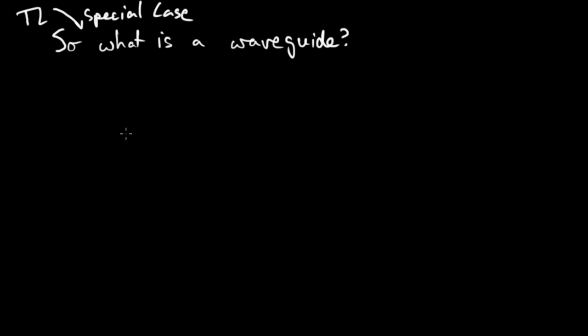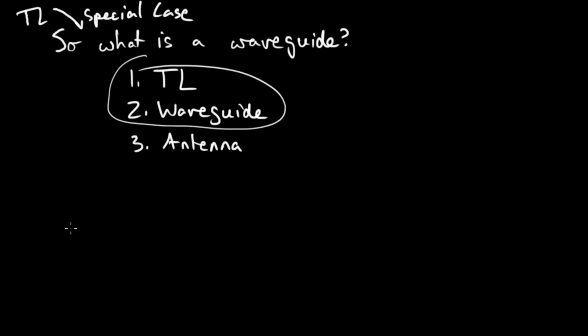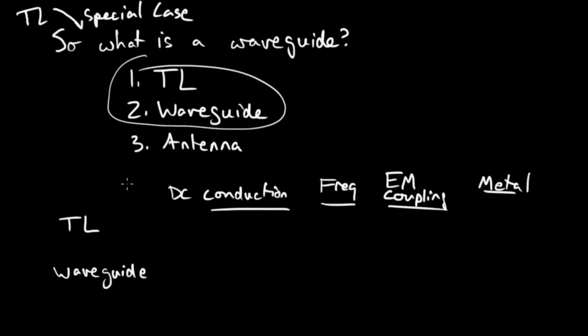Broadly there are only three ways to transmit electromagnetic signals from source to load. You can either use a transmission line, you can use a waveguide, which as I mentioned is a special case of transmission line, or you can use an antenna, where you're transmitting through free space, maybe in the near field, probably more likely in the far field. So let's compare just the transmission line and waveguide. So here I'm going to make transmission line, waveguide, and I'm going to draw out some categories here. So let's say DC conduction, can they conduct at DC, the frequency range where they matter, EM coupling, and whether it's made of a metal or not. There we go. Let me just fill this in real quick.